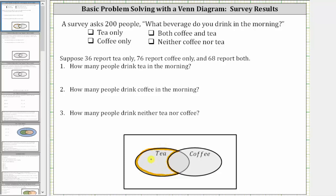We'll place 36 in the tea-only region. We're told 76 report coffee only, so these 76 people must be in the coffee set, but not in the intersection of the coffee and tea sets, because they drink both. So the 76 people that drink only coffee must be placed in the coffee-only region. We also place 68 in the intersection, since 68 people report drinking both coffee and tea.